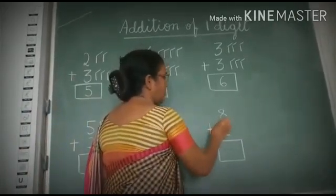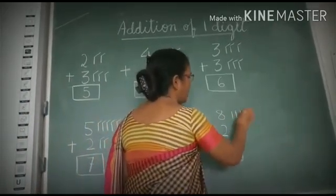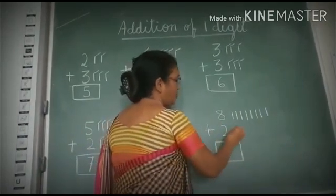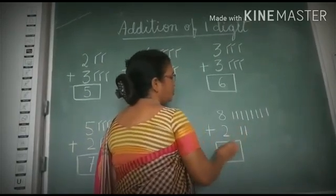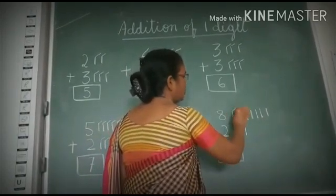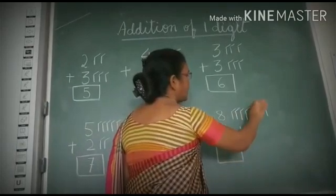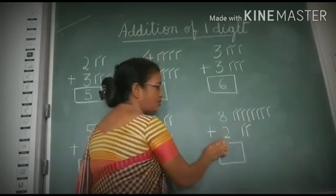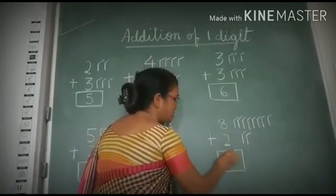This is 8. 1, 2, 3, 4, 5, 6, 7, 8. This is 2. 1, 2. 1, 2, 3, 4, 5, 6, 7, 8, 9, 10. So 8 plus 2 is 10.